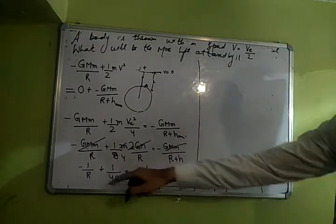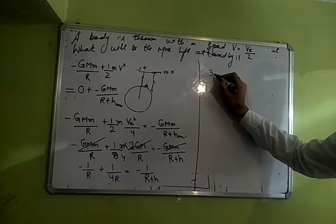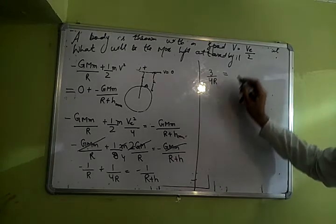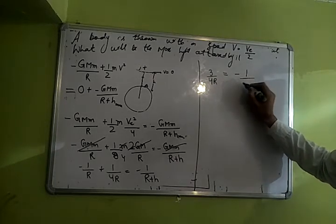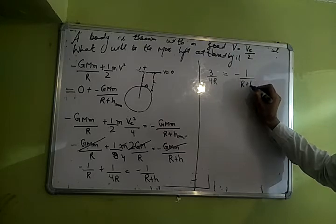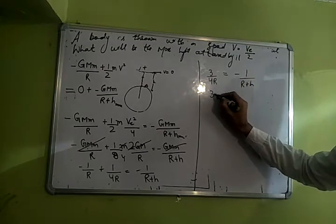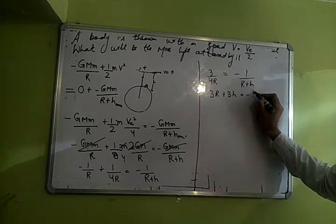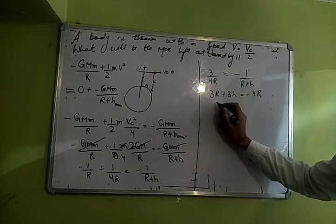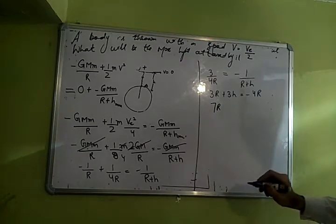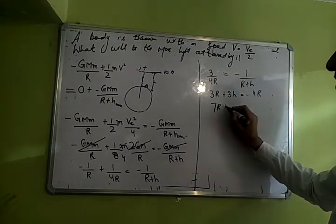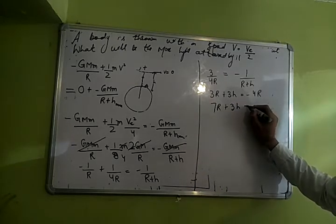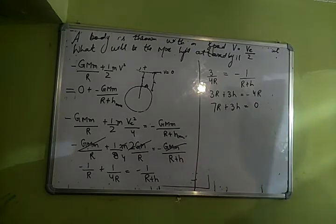h thi kya? Aayega yahan pe 4r minus r, that is 3 by 4r is equal to minus 1 by r plus h. Cross karo, 3r. I will further solve it. Plus 3h is equal to minus 4r. Ok, 4r, 7r ok, plus 3h is equal to 0.